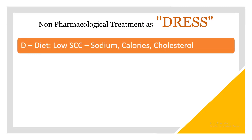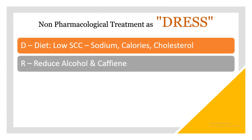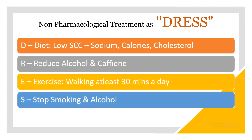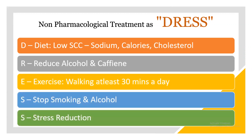Non-pharmacological treatment can be remembered as DRESS. D is for diet — control low SCC: S for sodium, C for calories, C for cholesterol. R is reduce alcohol and caffeine. E is for exercise — walk at least 30 minutes a day. S is stop smoking and alcohol. S is stress reduction.